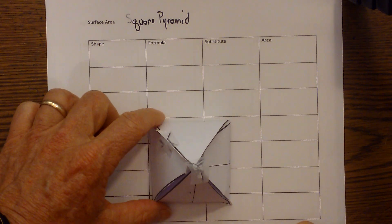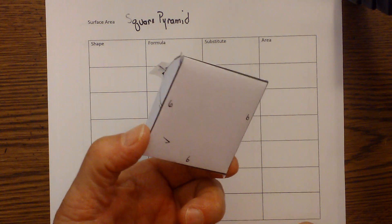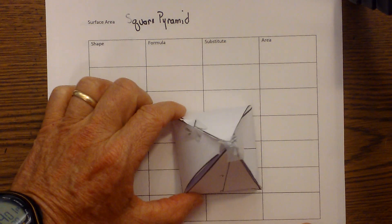A pyramid is named after the shape of the base and you can see with this 3D shape that it has a square base.